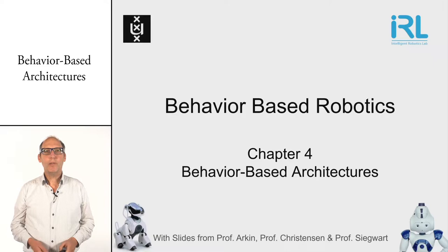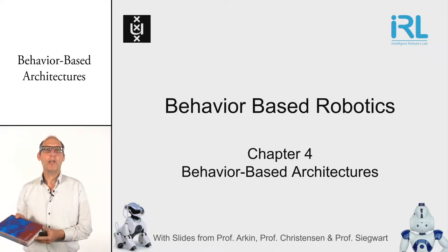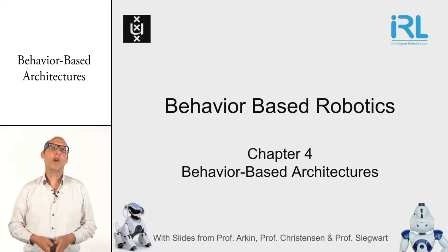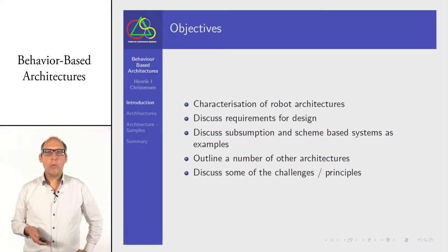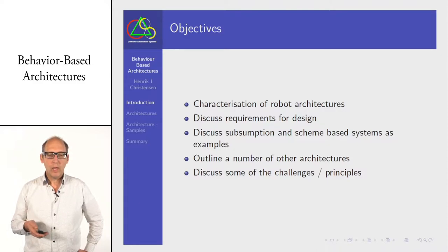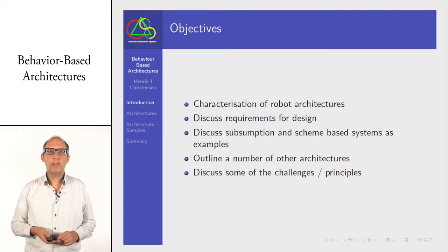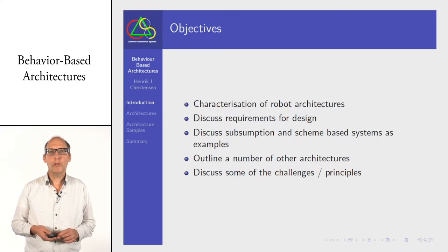Welcome back to chapter 4 of the book from Professor Arkin, 'Behavior Based Robotics'. Today we are covering the architecture. What we want to learn is what are the characteristics of robot architectures, what are the requirements you need to know in advance to design them. We look at two major examples: the subsumption and the schema-based systems, and also show some alternatives. We also discuss challenges and principles you can learn from all those architectures.